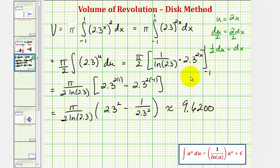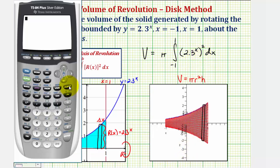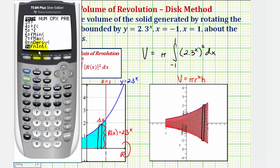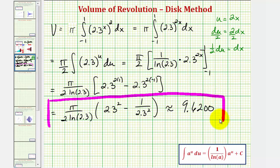This was a fairly involved integral, so just to make sure we didn't make a mistake, let's go back to the first slide and evaluate this integral using the graphing calculator. We have pi times our definite integral, so we'll press math and look for function integration — it's option 9. Next, we enter the integrand 2.3 raised to the power of 2x, the variable of integration x, the lower limit of integration negative 1, and the upper limit positive 1, then press enter. Notice how this verifies our result — we have our exact volume and the approximate volume. I hope you found this helpful.